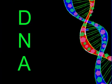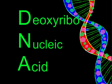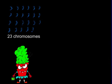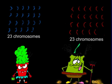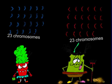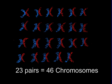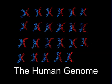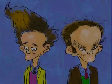This life-giving molecule is called DNA, which stands for deoxyribonucleic acid. As humans, we inherit 23 chromosomes from our mother and 23 from our father. These combine to make 23 pairs, a total of 46 chromosomes, which make up the entire human genome — in other words, the instructions to make a human.